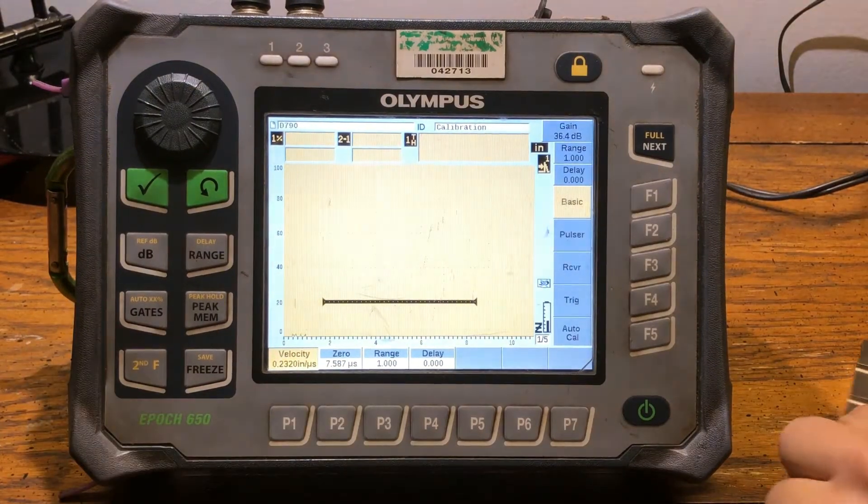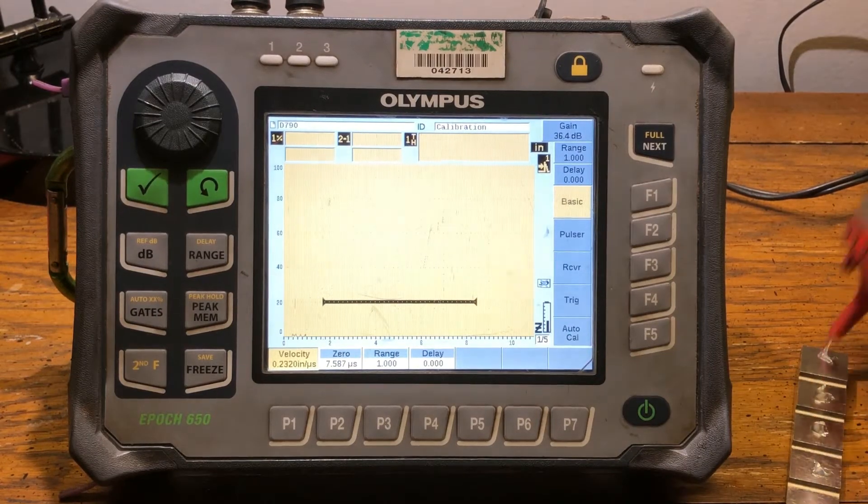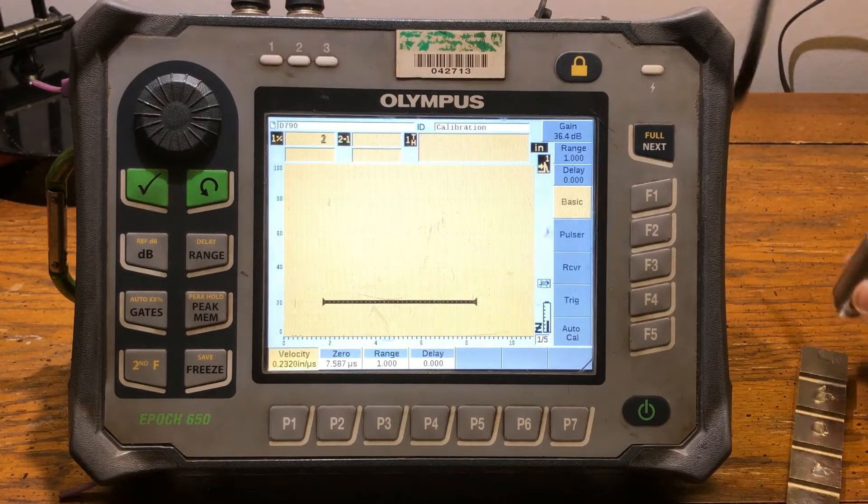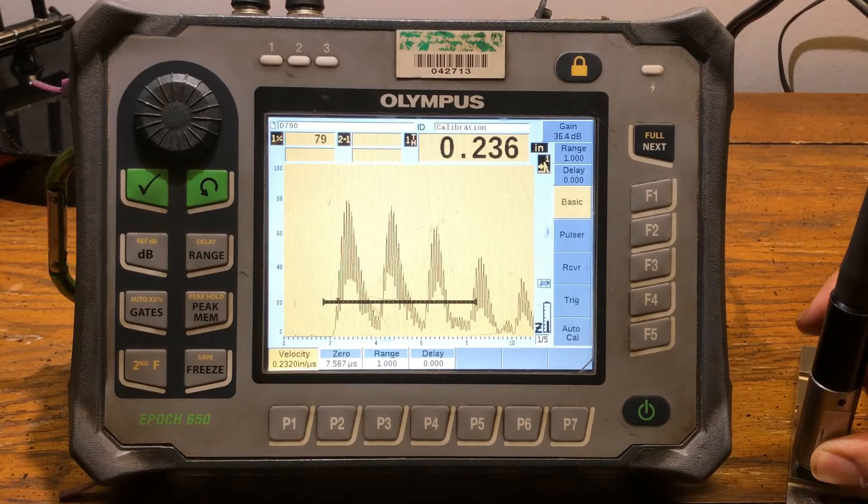We're gonna be putting some coupling on our step wedge on the two and the three, the four and five. We want to see how we stand here. So you see I put it on the two right now and we're actually off by about 36 mils.